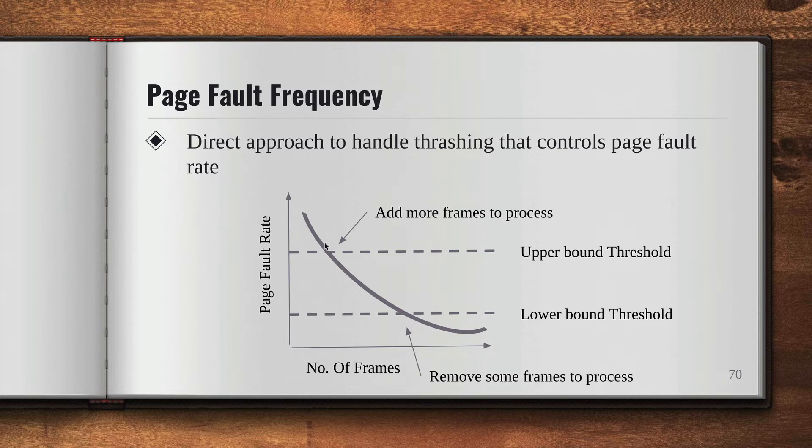If the page fault rate falls below the lower bound threshold, then some frames will be removed from the process to avoid thrashing.